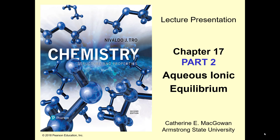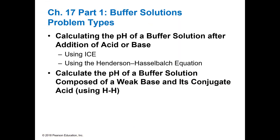Hello, welcome back. This is Dr. Kofelt again and we're going to look at the second part of our aqueous ionic equilibrium, or the buffer chapter. In this section we're going to look at calculating the pH of a buffer solution once you've added a little bit of acid or base to it. In the first section we made the buffers and figured out what the pH was. Now we're going to add a little bit of acid or base and use ICE tables or Henderson-Hasselbalch to calculate what is going to happen.